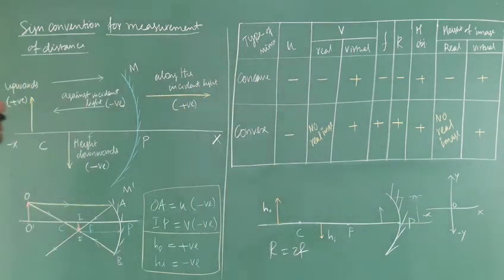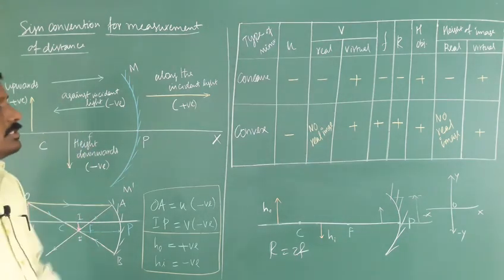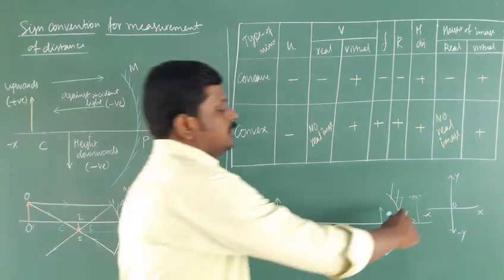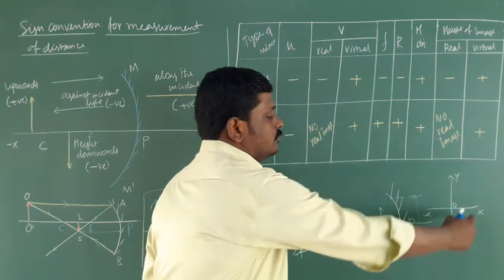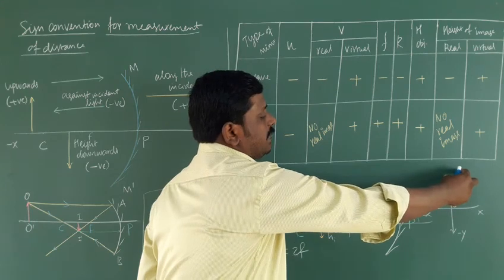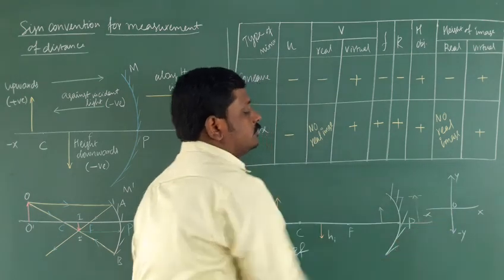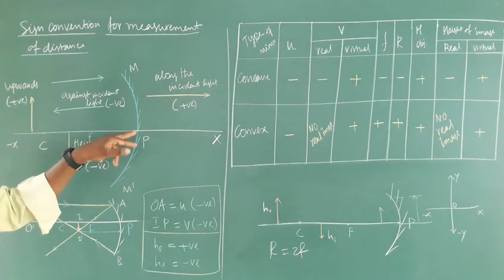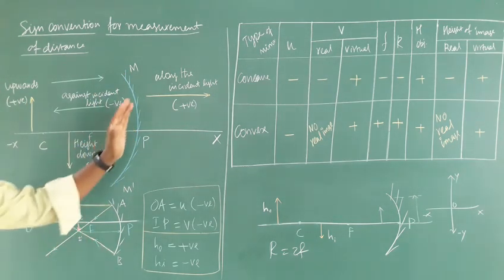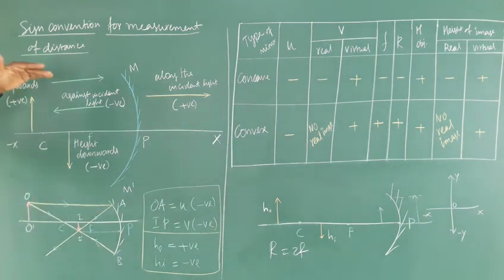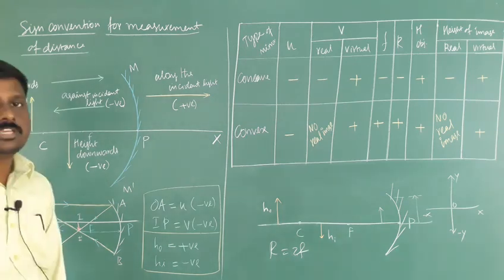In this class we discussed the sign conventions followed for the measurement of distance in ray diagrams. Using the Cartesian sign convention: positive x axis is to the right, negative x axis to the left, above the principal axis is positive y, below is negative y. The pole P is the origin. Left-hand side of the mirror is negative, right-hand side is positive. Above the mirror is positive, below is negative.